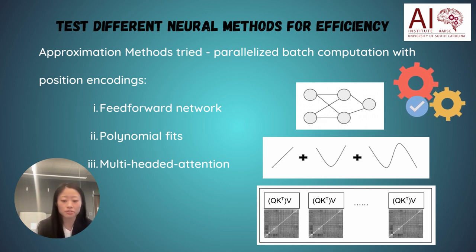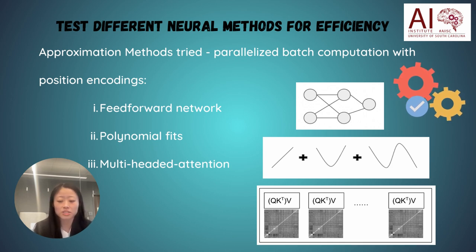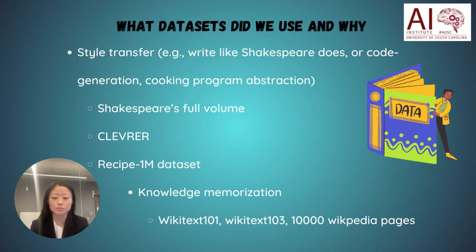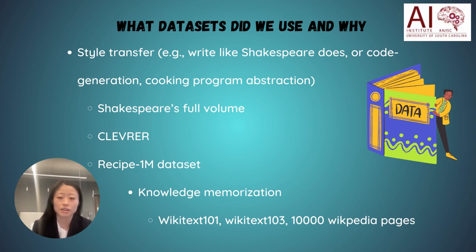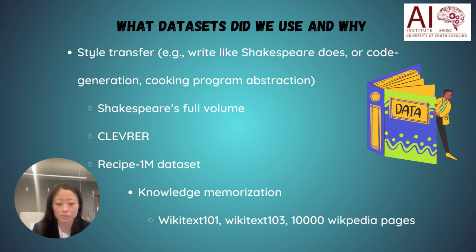Since the neural module consumes considerable computing resources — for example, GPU memory, number of epochs to train, and number of parameters to fit — we investigate different architectures to compare their efficiencies: first, a two-layer feed-forward network; second, a polynomial function approximator; third, a multi-headed attention-based neural network. We test these architectures for their ability to accomplish two broad categories of tasks: style transfer (such as 'write like Shakespeare' or 'generate code') and knowledge memorization (such as answering questions from Wikipedia text excerpts), using the relevant datasets.